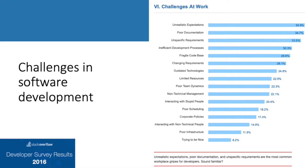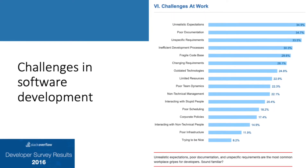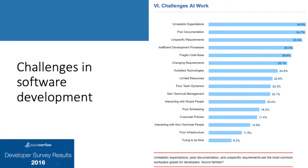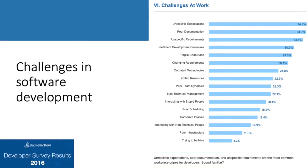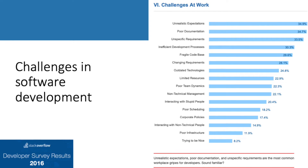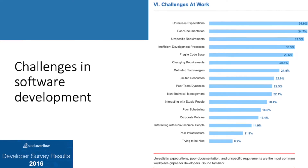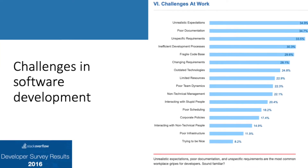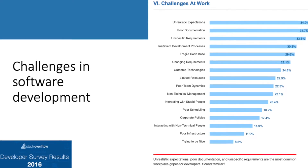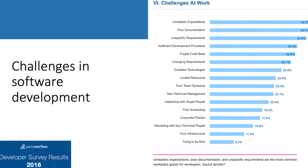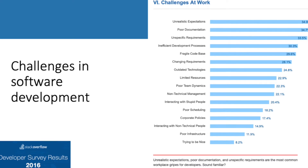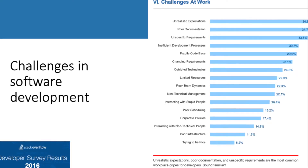We will begin with the results of a survey made by Stack Overflow. As we can see, the most problematic areas in software development are unrealistic expectations, poor documentation, unspecific requirements, inefficient development process, and fragile codebase. Let's talk about those issues and how to avoid them — how to make development easier.